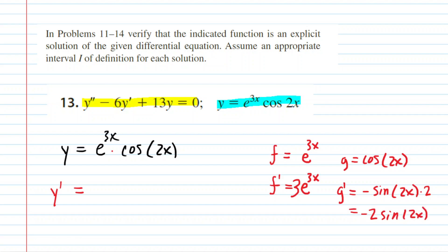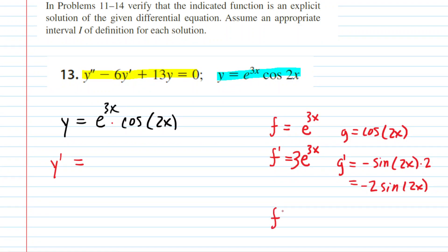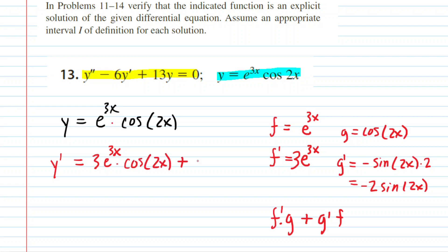The product rule has the form I like to call 'fig plus gif': take f prime times g, then add g prime times f. Plugging in: f prime is 3e to the 3x times g which is cosine of 2x, then we add g prime. Be careful — g prime is negative 2 sine of 2x, so you'll end up subtracting 2 sine of 2x, and that is multiplied by f which is e to the 3x. That gives our first derivative.